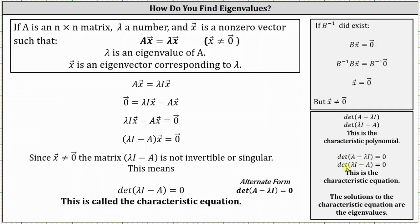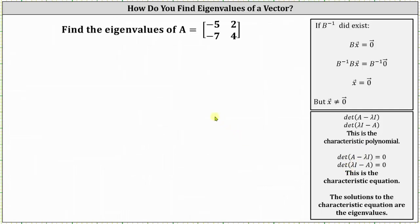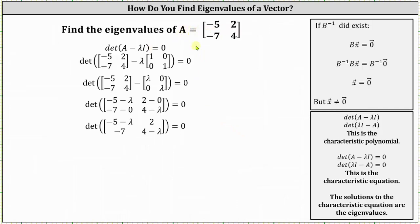Now let's look at an example. Let's determine the eigenvalues of the given matrix A. We begin with the characteristic equation, which gives us the determinant of matrix A minus lambda times the 2 by 2 identity matrix. Next we perform scalar multiplication with lambda and then subtract the two matrices, which gives us the determinant of the 2 by 2 matrix where the entries are negative 5 minus lambda, 2, negative 7, and 4 minus lambda. Notice how the only difference from the original matrix is we subtracted lambda from the elements along the main diagonal, so after a while we'll skip straight to this step.